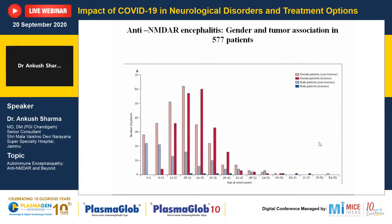This is a landmark paper with a cohort of more than 577 patients, delineating the presence of this antibody, gender, and tumour association with anti-NMDAR encephalitis, published in 2013. Looking closely at the diagram, patients aged 12 to 40 comprise the majority. Most patients were female, and nearly 50% of these female patients had an associated tumour — specifically teratoma.